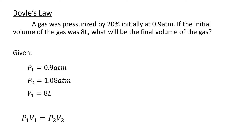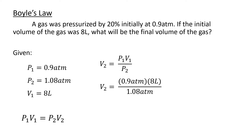From the formula P1V1 = P2V2, we derive V2 = P1V1 / P2. Substituting: V2 = (0.9 atm × 8L) / 1.08 atm. The unit of atmosphere cancels out, leaving liters. So our final volume is 6.67L, which is less than our initial volume of 8L, since the pressure from P1 to P2 increased.